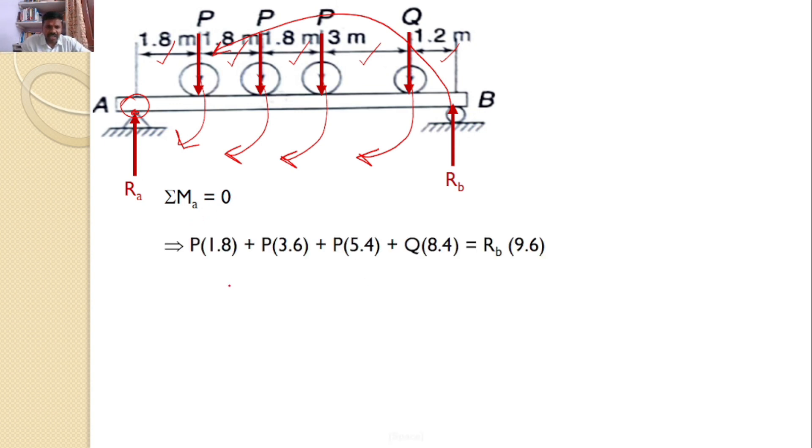So, sigma M about A equals 0, that implies P times 1.8 plus another P times 3.6 plus this P times 5.4 plus Q times 8.4. All these four forces will introduce moment in the clockwise direction. But this Rb will introduce the moment in the counterclockwise direction. Hence, that equals Rb times the total distance 9.6.